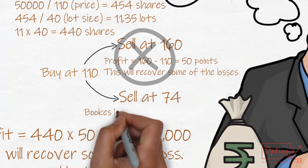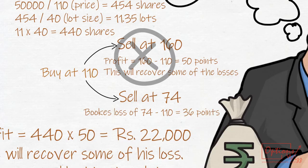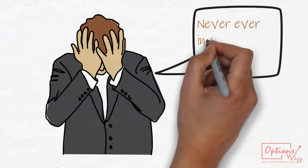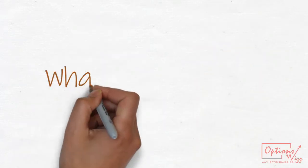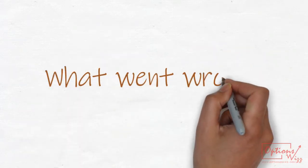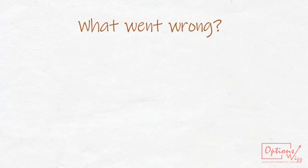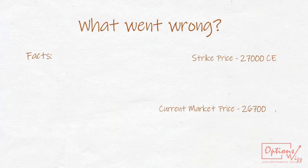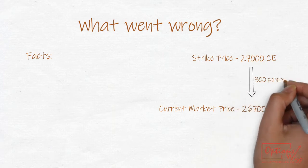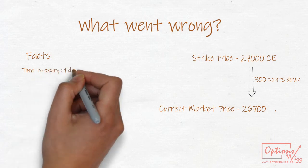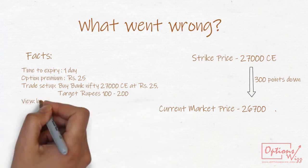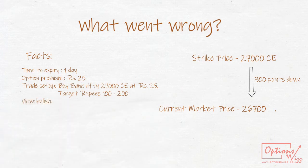This high voltage shock which Raj got changed his mindset about options and stock market in general. All his excitement is gone, and now Raj says never ever invest in stock market. Now let us analyze what went wrong with this super exciting trade. We will quickly put down the facts. Option strike price is 27,000 call option. Current market price is 26,700, 300 points below the strike price. Trade setup is buy Bank Nifty 27,000 call at rupees 25, target is rupees 100 with 1 day to expiry.